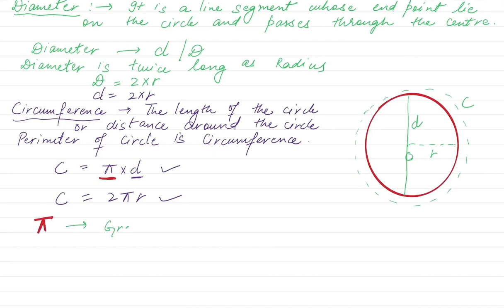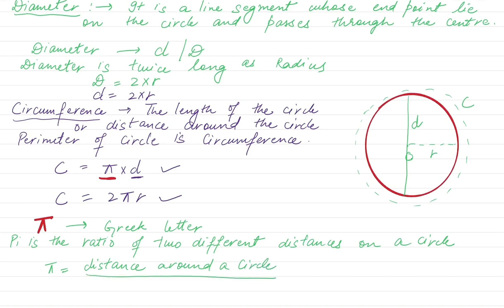What is pi now? Pi is a Greek letter. Pi is basically the ratio of two different distances on a circle. Pi is equal to, it's a ratio between distance around a circle divided by distance across a circle, which equals circumference divided by the diameter.